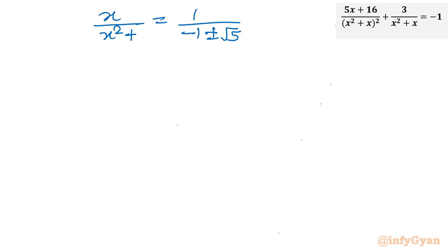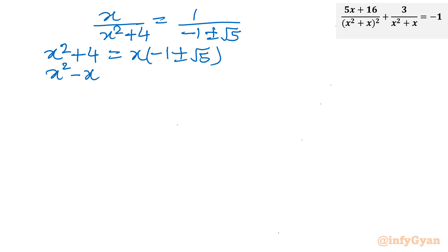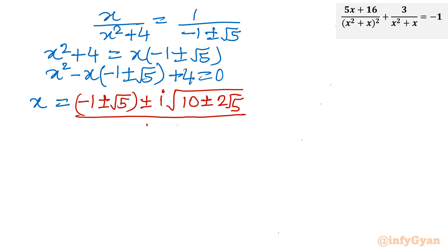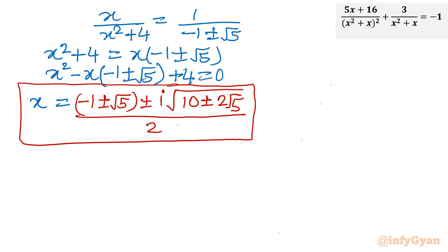Taking all terms to the LHS: x² − x(−1 ± √5) + 4 = 0. Since this involves irrational coefficients it is again a quadratic equation, so we apply the Sridharacharya formula. The result is x = (−1 ± √5) / 2 (with complex discriminant). We obtain four complex solutions — no real solutions.